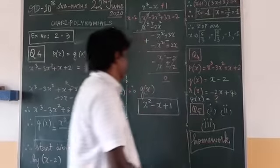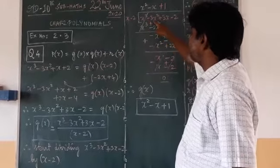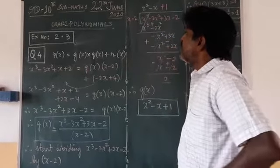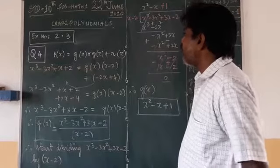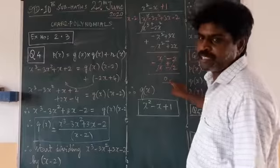I have taken here. See, in the bracket X cube minus 3X square plus 3X minus 2, I return. Outside divisor is X minus 2, I am dividing. Then I am starting division. I am getting 0 as the remainder.